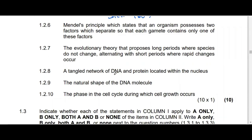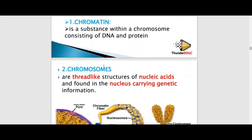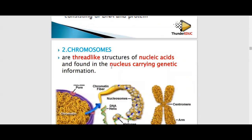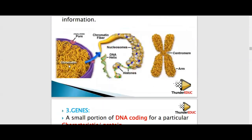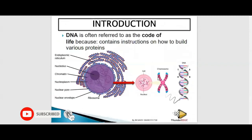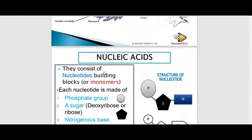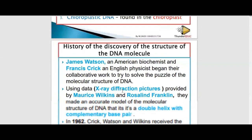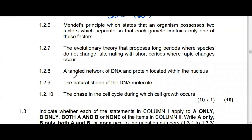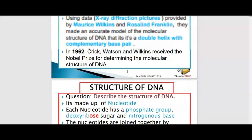An entangled network of DNA and protein located in the nucleus — this is the chromatin network. In our book, chromatin network is described as a substance within the chromosome consisting of DNA and protein. If you go to DNA replication, you'll find the chromatin network again — it consists of DNA and protein located in the nucleus.